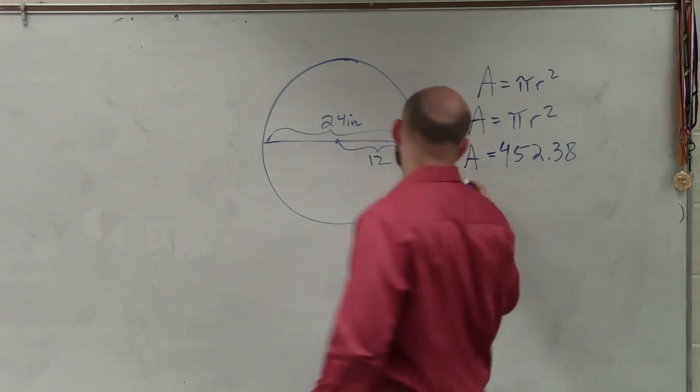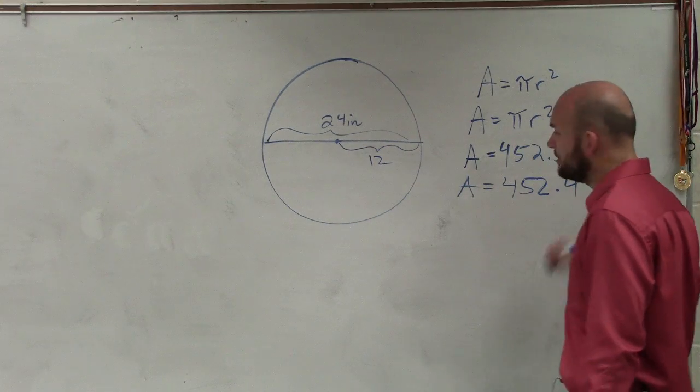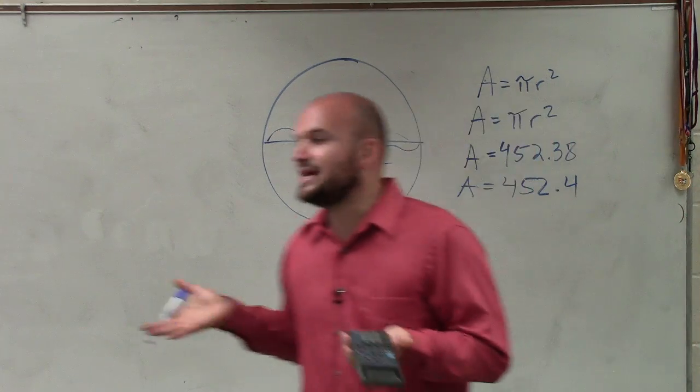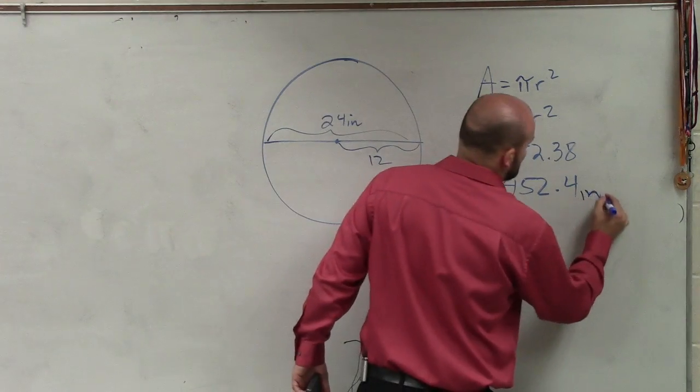To round to the nearest tenth, area equals 452.4. And then we've got to make sure, since we're dealing with area, we're dealing with two dimensions, so it's going to be inches squared.